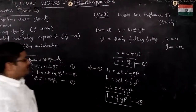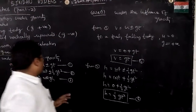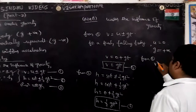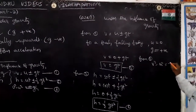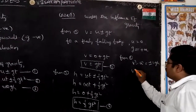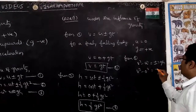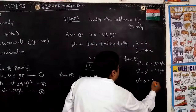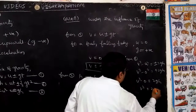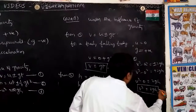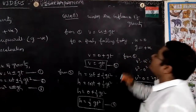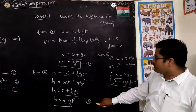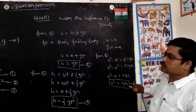Now from equation 3, V² - U² = ±2GH. So V² - 0² = +2GH, which gives V² - 0 = +2GH, therefore V² = 2GH. This is equation number 6. So there are 3 equations of motion under the influence of gravity for a freely falling body: V = GT, H = ½GT², and V² = 2GH.